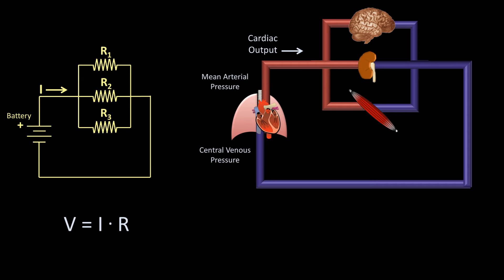For the resistors, each organ can be thought of as its own. For example, here I've shown the brain, kidney, and muscle, but there are obviously many, many more, and even how one divides the body into parallel resistors is kind of arbitrary.